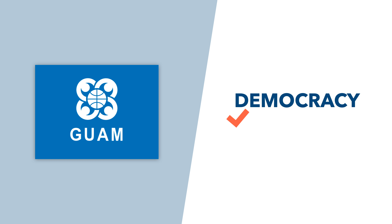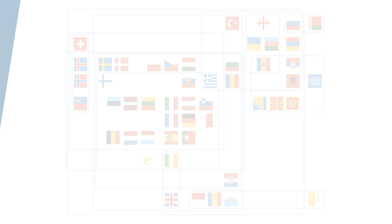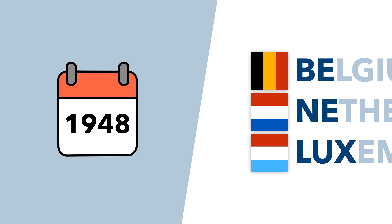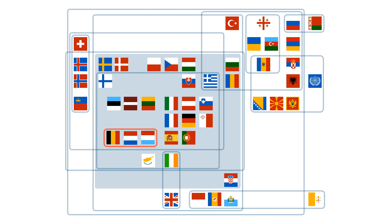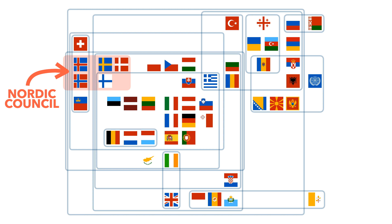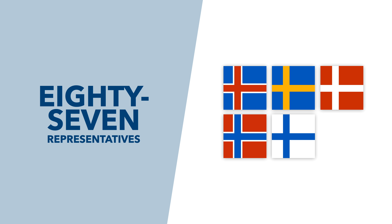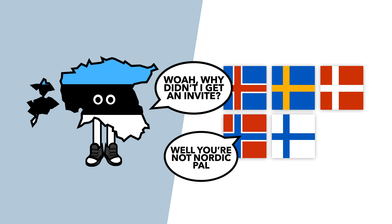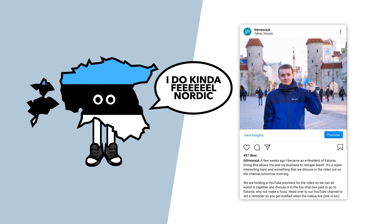GUAM's main goals are strengthening democratic values, the rule of law, human rights, development and so on. Another group named after their founders, Benelux first referred to a customs union established back in 1948. But today, given each country's membership of the European Union, Benelux tends to refer to the generic grouping of these three countries. The Nordic Council is comprised of the Nordic states, and describes itself as the official body for formal inter-parliamentary cooperation with representatives from the Nordic countries. Just don't tell Estonia they've been left out — despite not being officially recognised as Nordic by the international community, it's common for citizens to identify with their neighbouring Nordics.